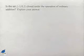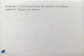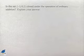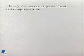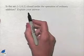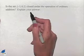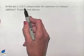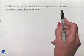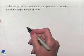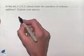Our next problem deals with closure: Is the set {-1, 0, 1} closed under the operation of ordinary addition? Explain your answer. We consider a set closed under an operation if when we take any elements from the set and in this case add them together, we end up again with an element in the set.